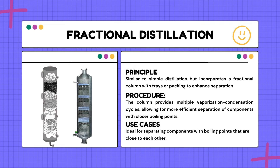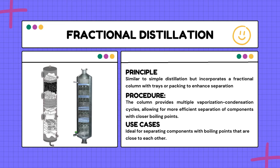Looking at the procedure of fractional distillation, it begins with gently heating the liquid mixture, similar to simple distillation. The key element is the fractionating column — this is where the magic happens. Vapor rises through the column, passing through trays or packing materials. These surfaces provide opportunities for the vapor to condense and re-evaporate multiple times, enhancing the purity of the products. These repeated cycles create different temperature zones within the column, allowing components with close boiling points more chances to separate.